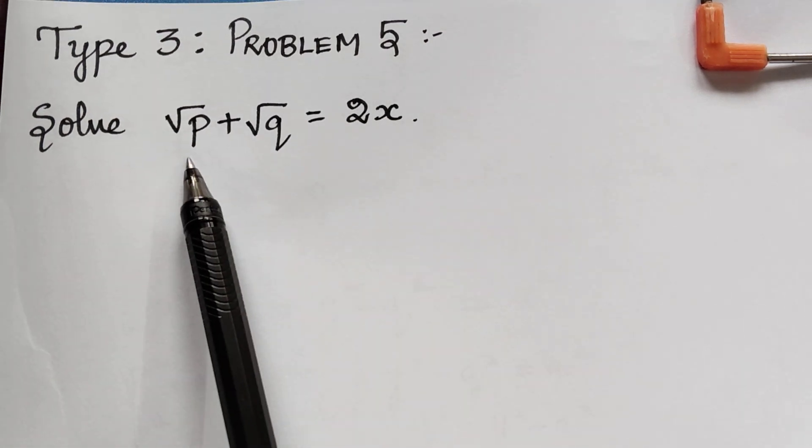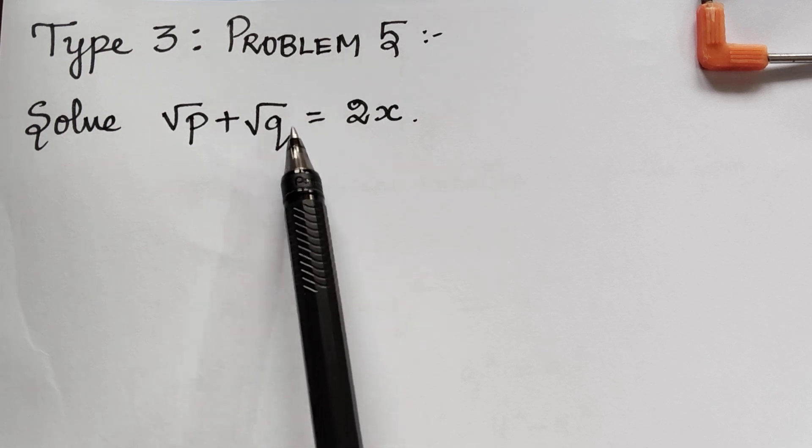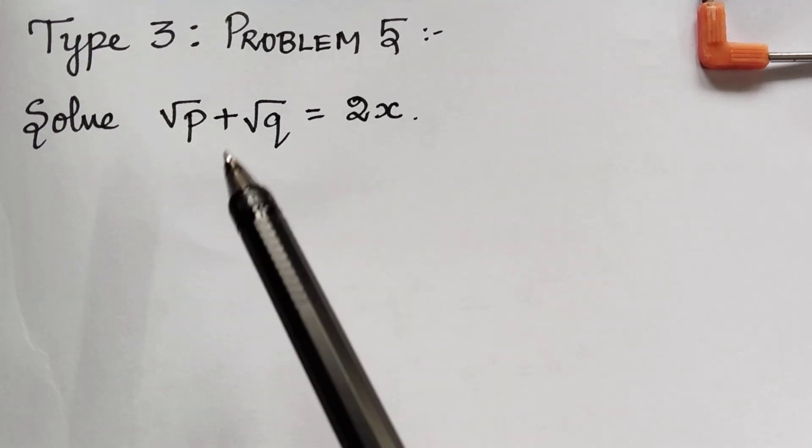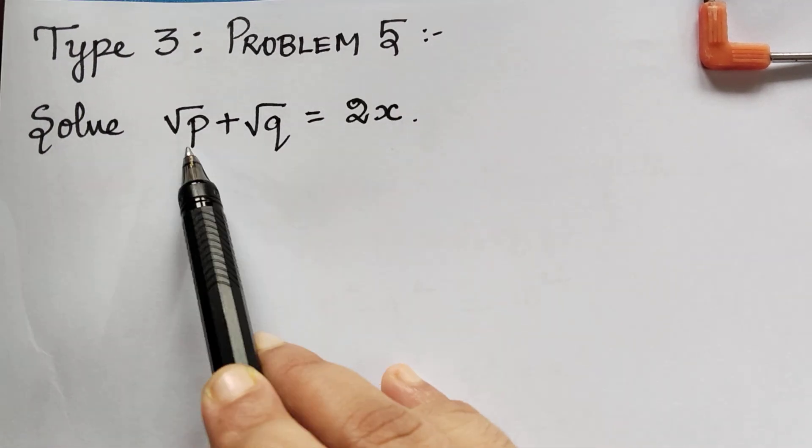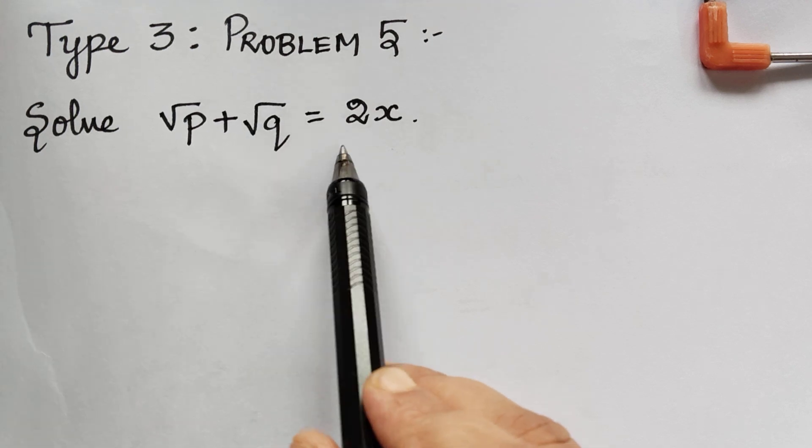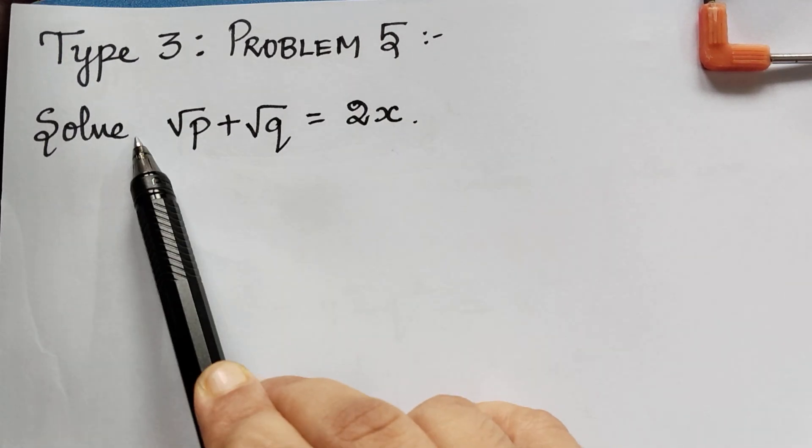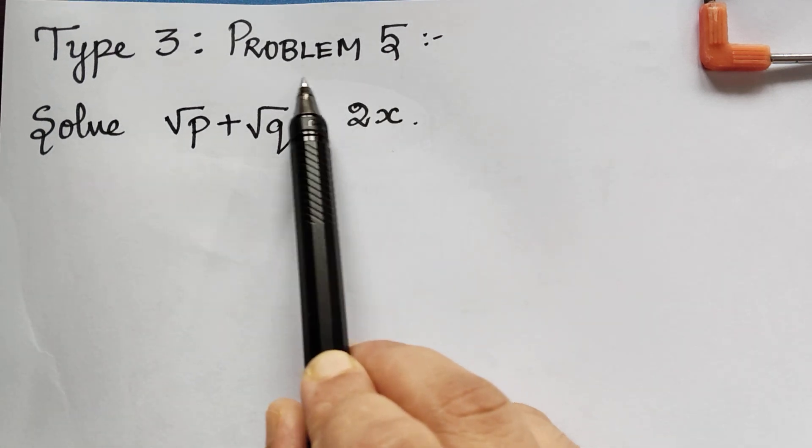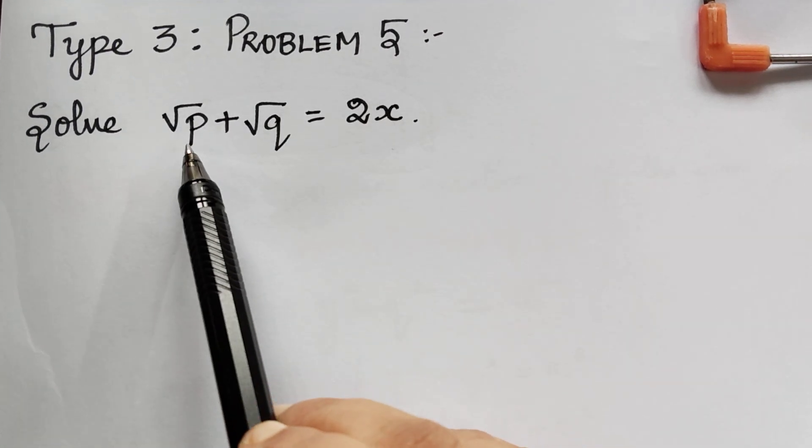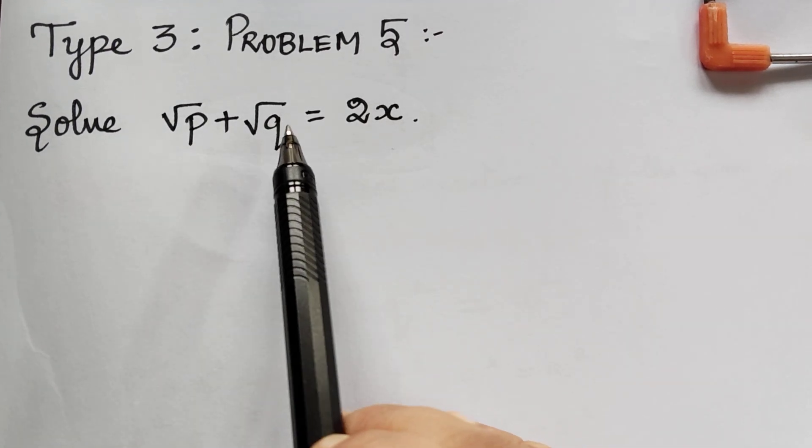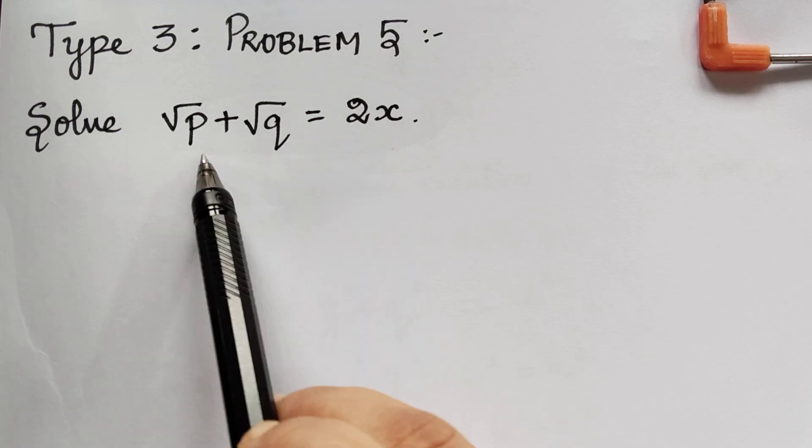The question is √p + √q = 2x. We observe that we have only x, p, and q. We don't have z. Whenever z is not present, this will be of the form f₁(x,p) = f₂(y,q).